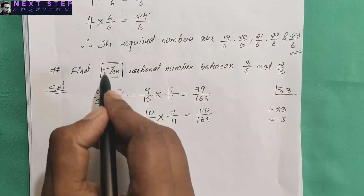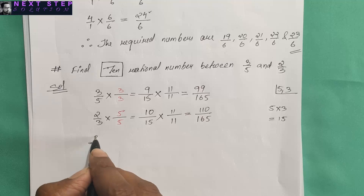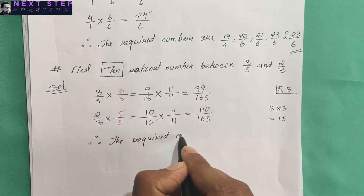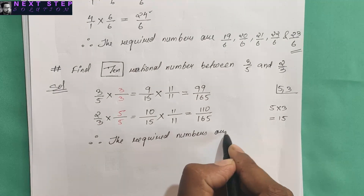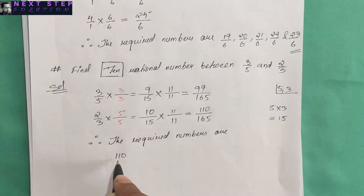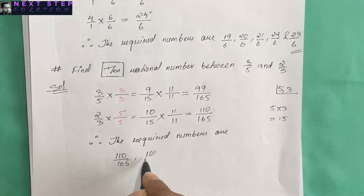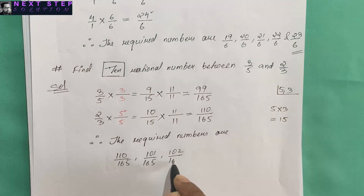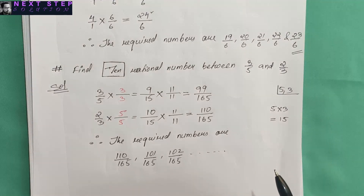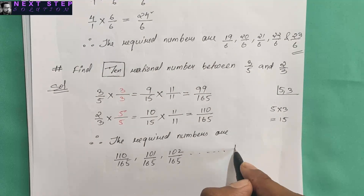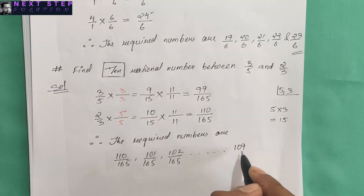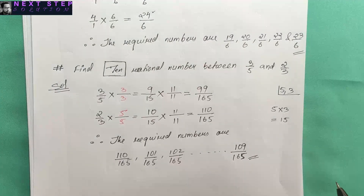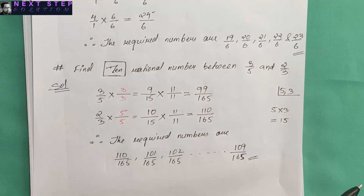Now between 99 and 110 we have the required 10 numbers. The required numbers are 100 by 165, 101 by 165, 102 by 165, and so on up to 109 by 165. In some cases you might get more than 10, but if they ask only 10, write down only 10 and then stop.